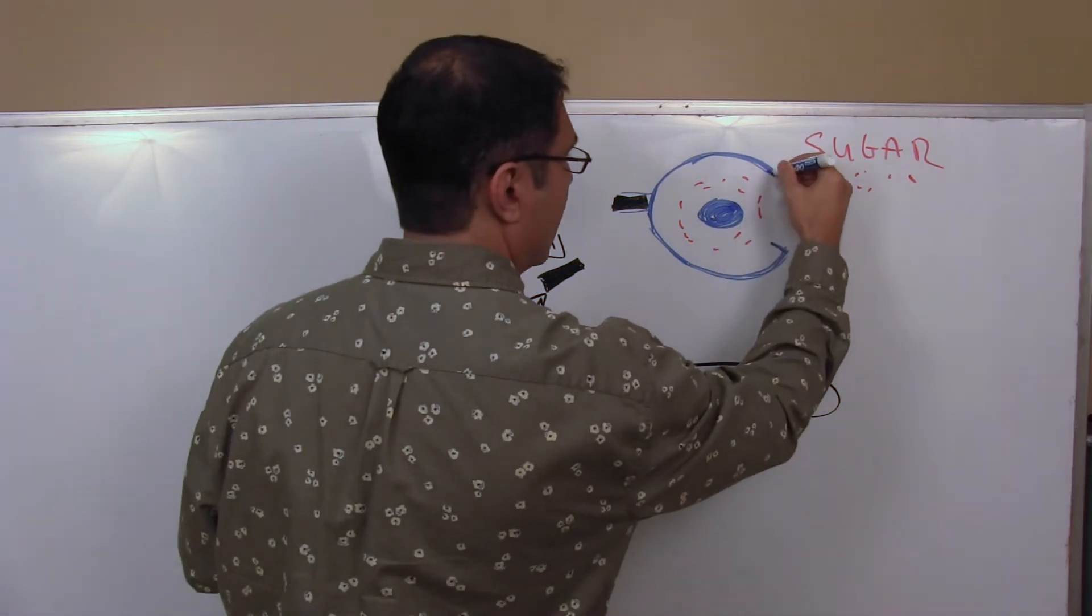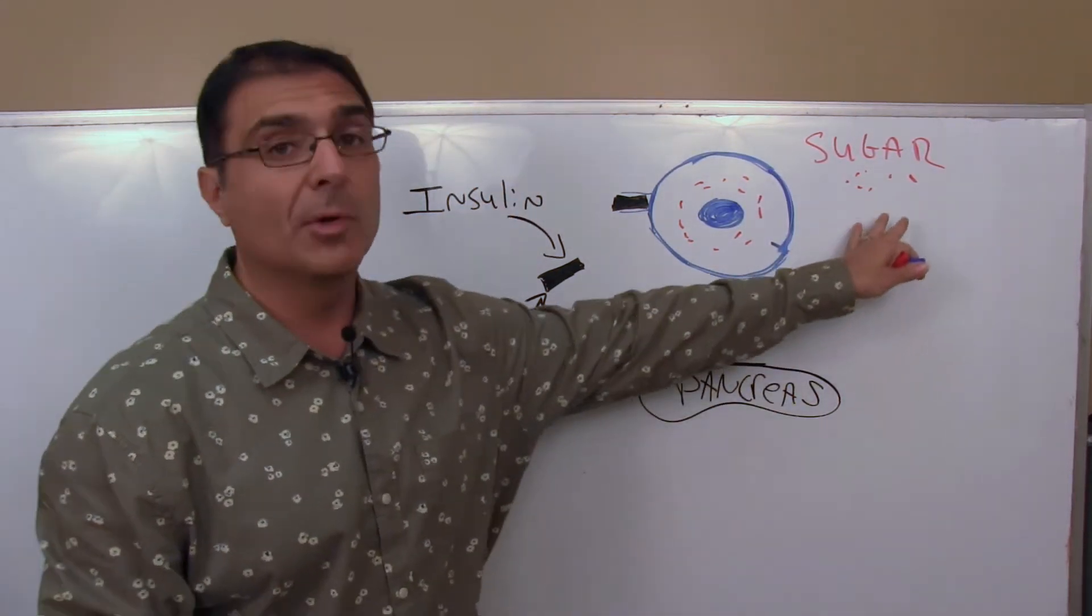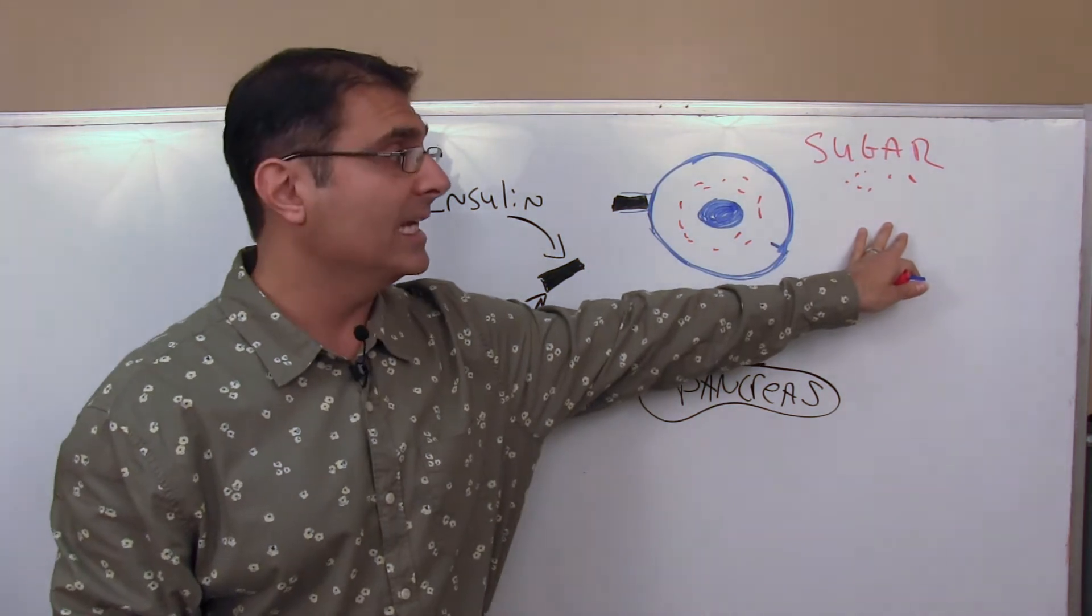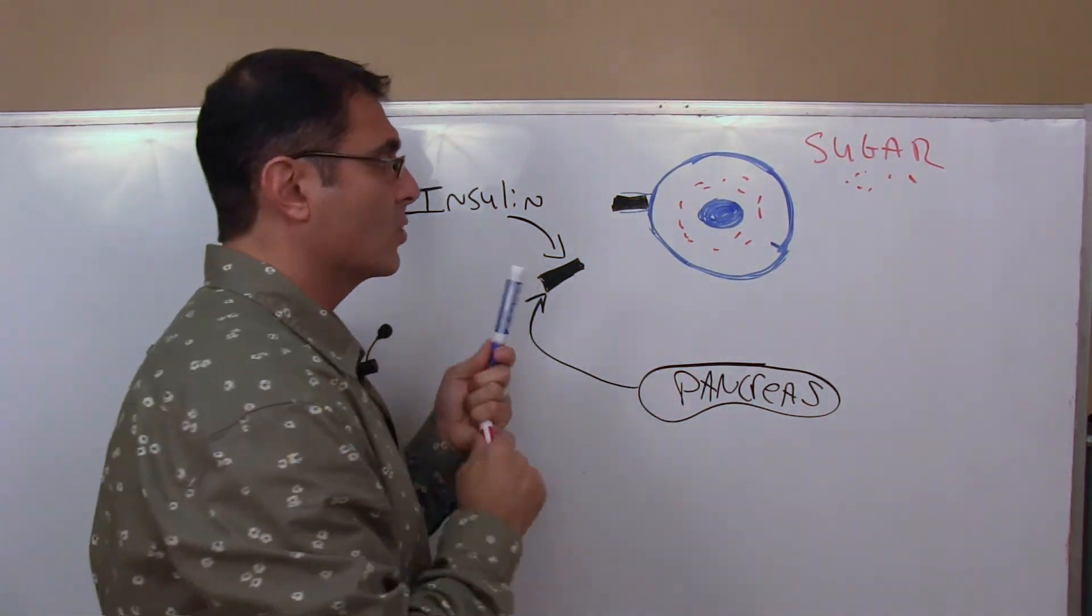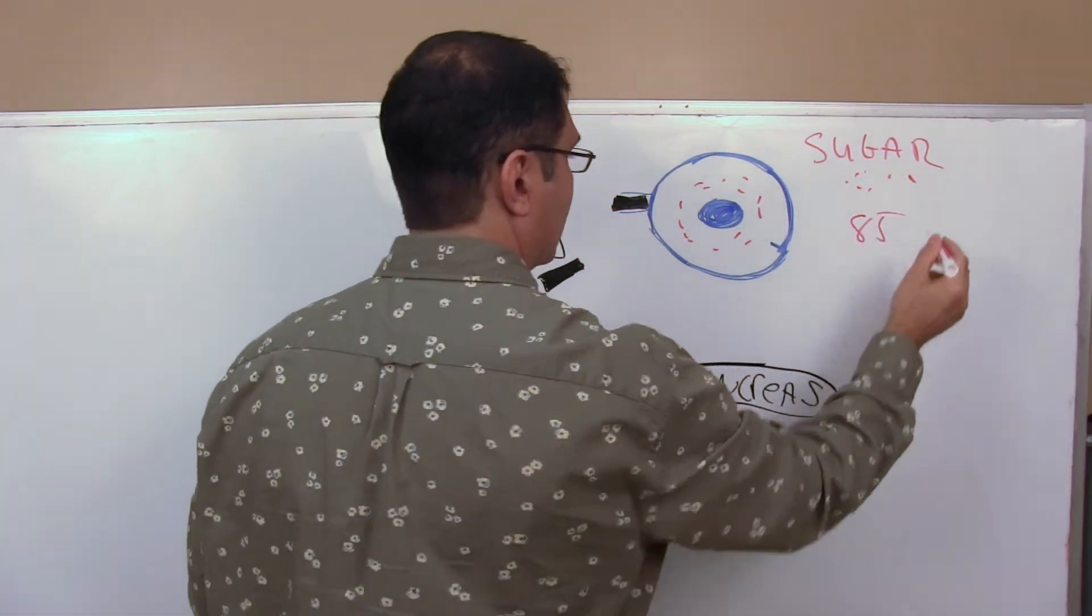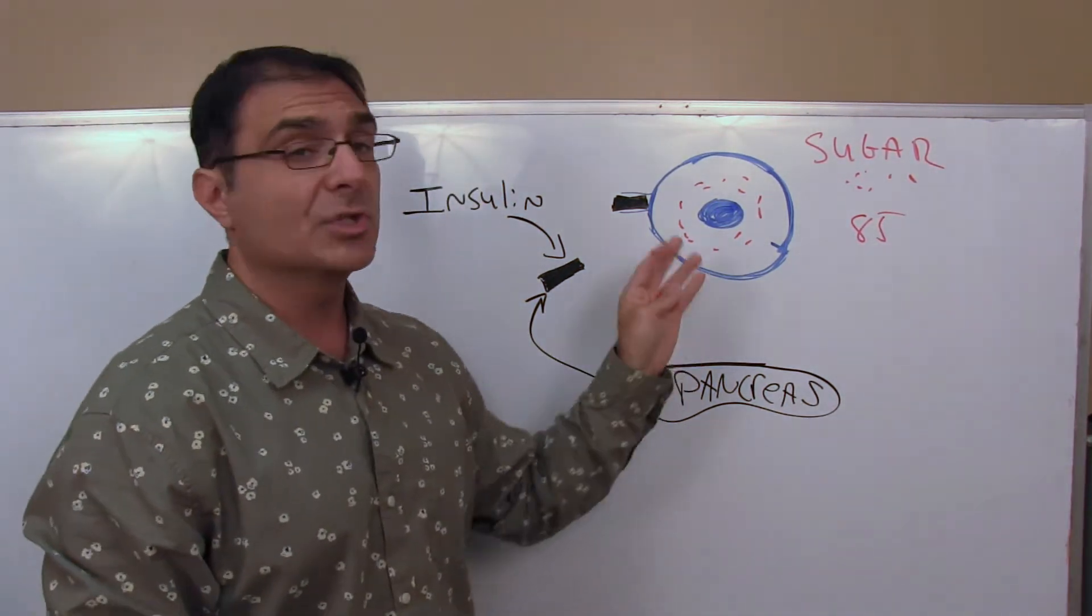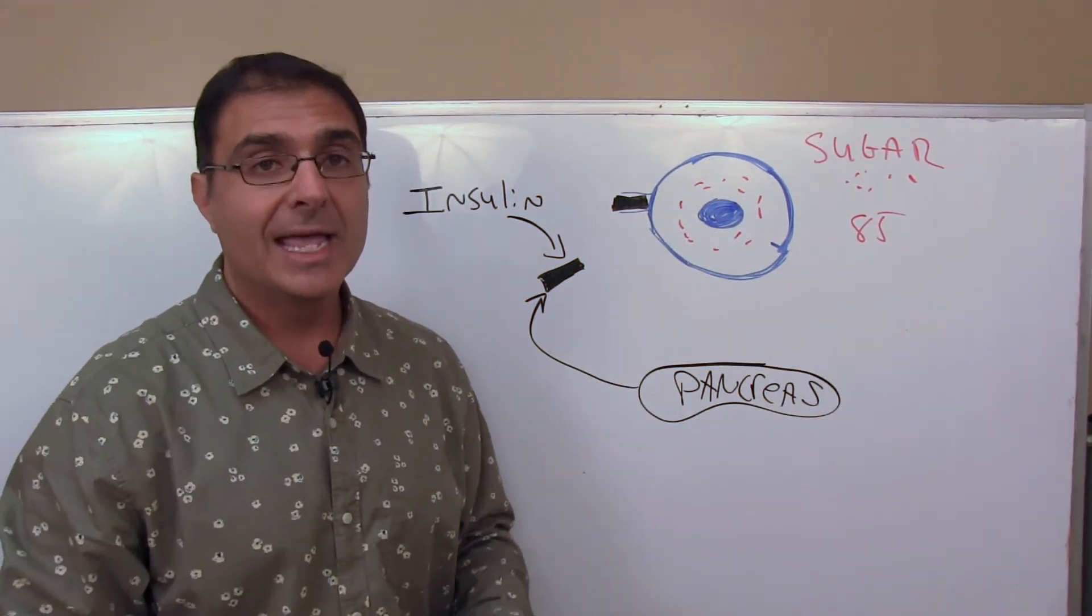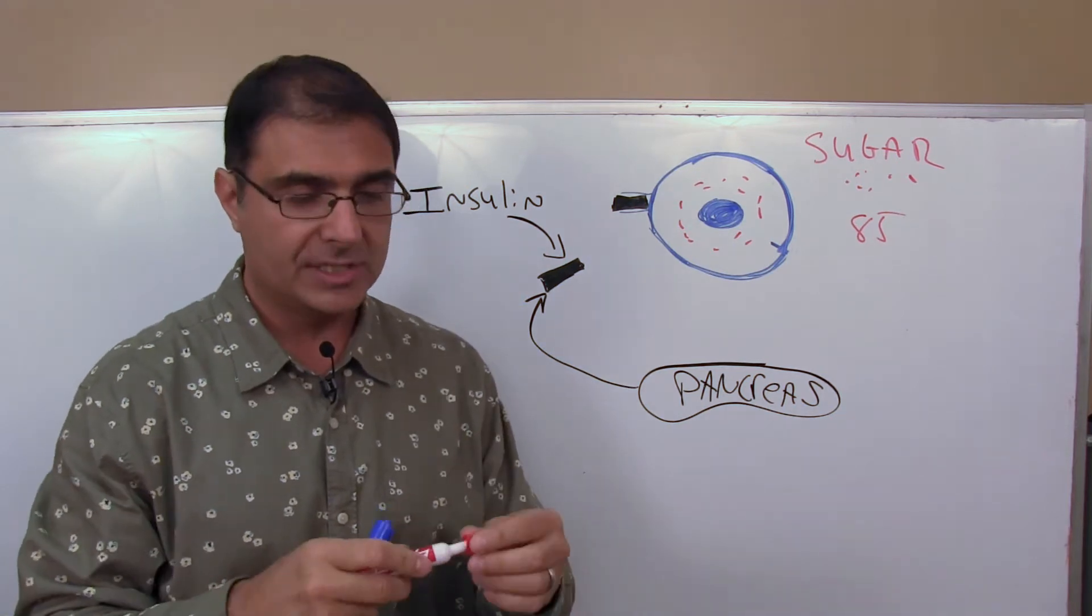The cell closes up and we have now normal blood sugar. This might be a blood sugar of 85 over here, so let's pretend that's normal, that's 85. Okay, so this is what's supposed to happen with the management of your blood sugar. In a type 2 diabetic, what's occurred is this.